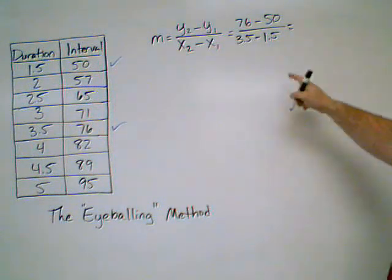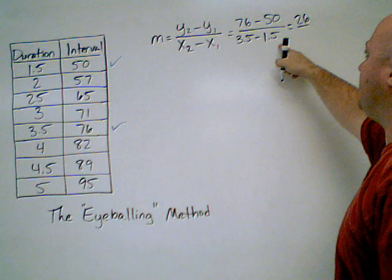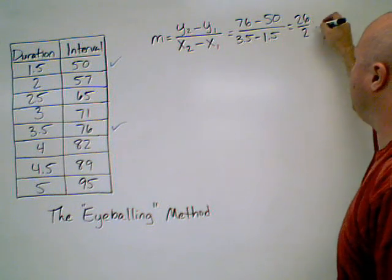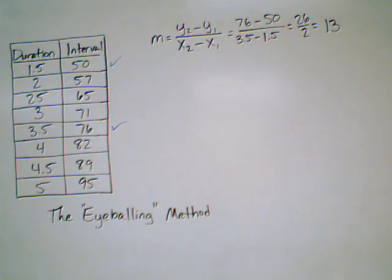Now I simplify this. 76 minus 50 is giving me 26. 3.5 minus 1.5 is 2, which gives me a slope of 13.